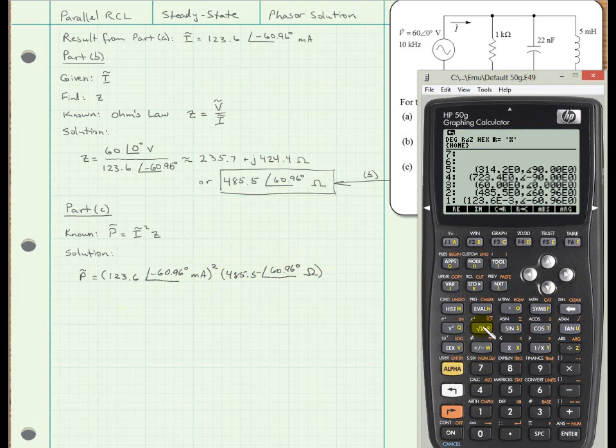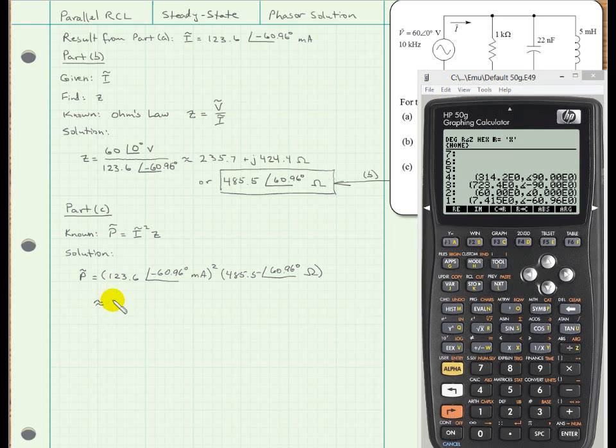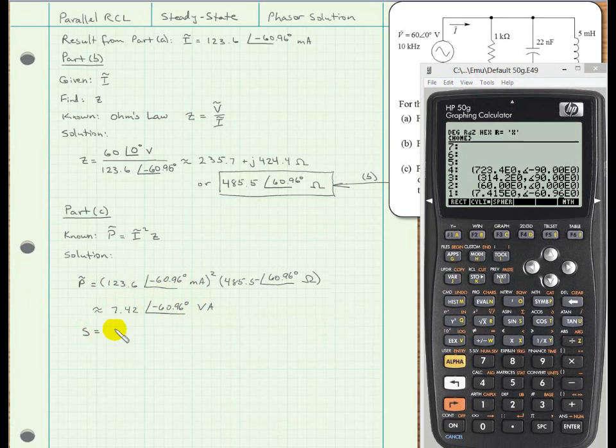And I get 7.415 at an angle of negative 60.96 degrees, and that is in volt-amps. That's an apparent power.